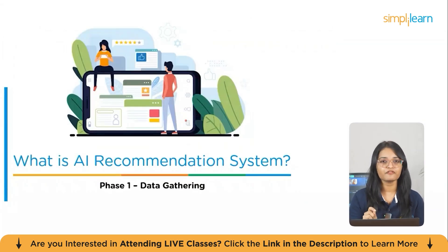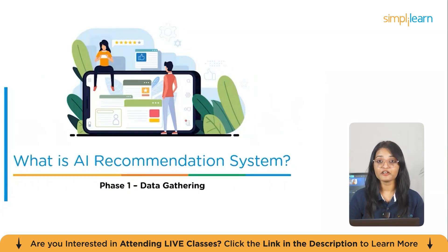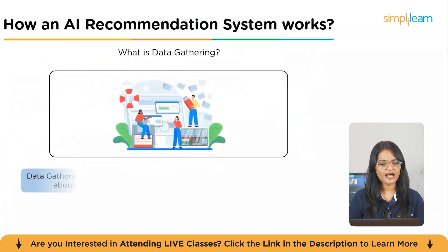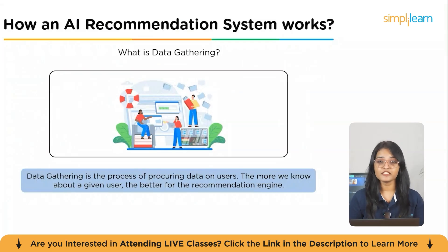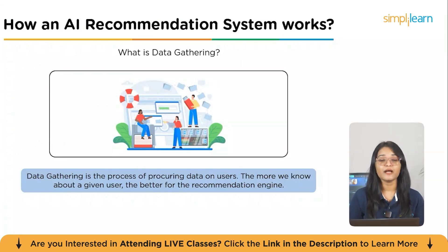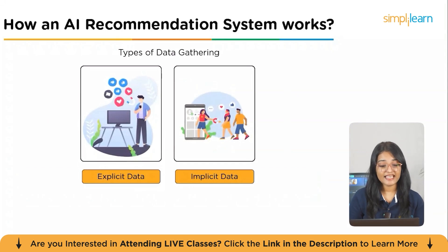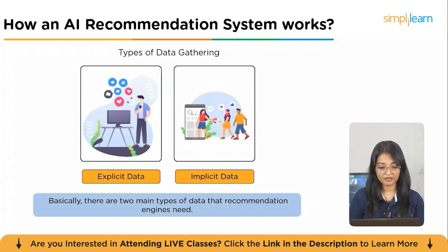Let's get into the details. Starting with the first phase: data gathering. The more we know about a given user, the better for the recommendation engine. There are two main types of data that recommendation engines need: explicit data and implicit data.